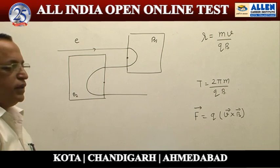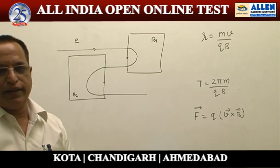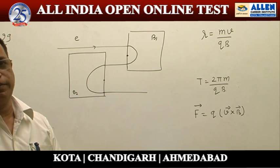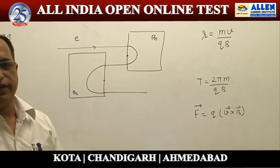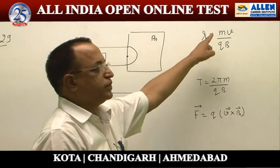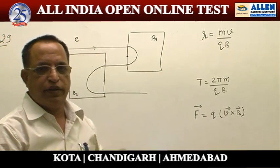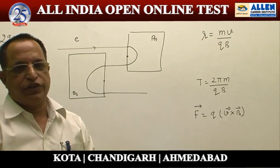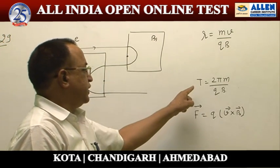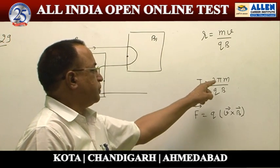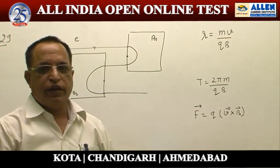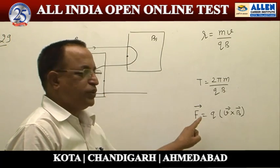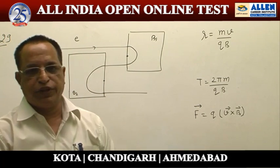When a charged particle enters at right angle in a magnetic field, the radius is given by r = mv / qB. The time taken for a complete rotation is given by T = 2πm / qB. The force in a magnetic field is given by F = qv × B.